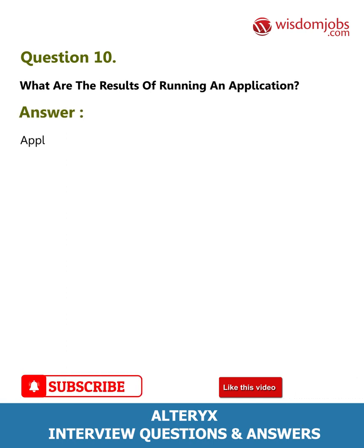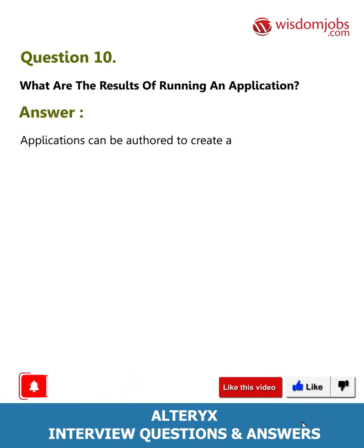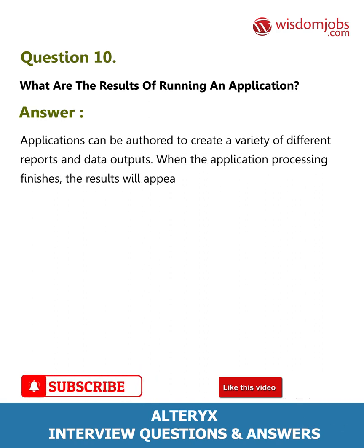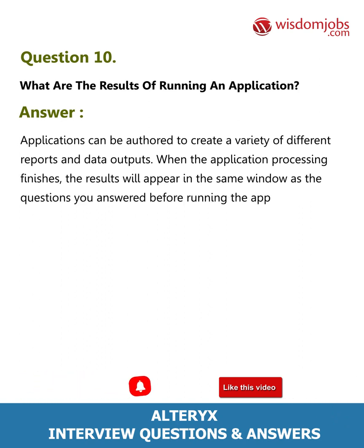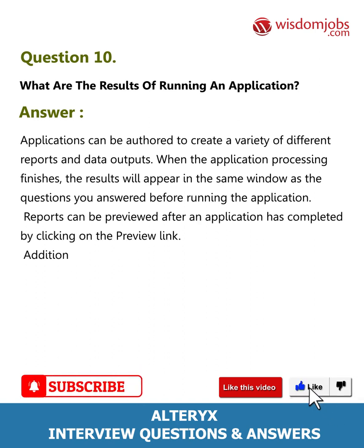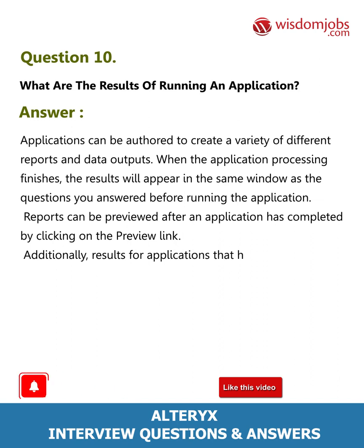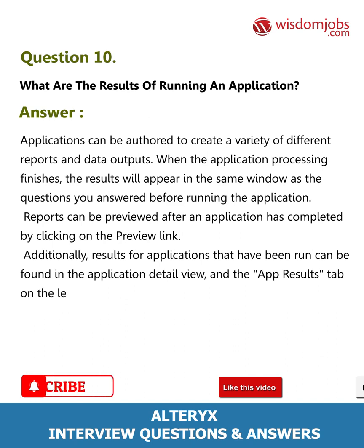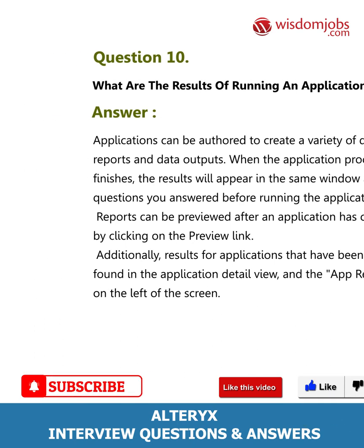Question 10: What are the results of running an application? Answer: Applications can be authored to create a variety of different reports and data outputs. When the application processing finishes, the results will appear in the same window as the questions you answered before running the application. Reports can be previewed after an application has completed by clicking on the preview link. Additionally, results can be found in the application detail view and the App Results tab on the left of the screen.